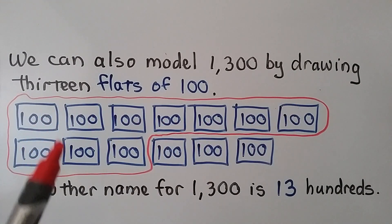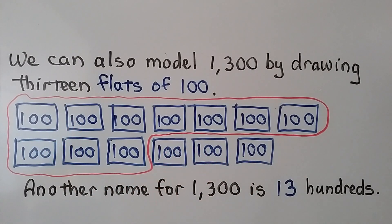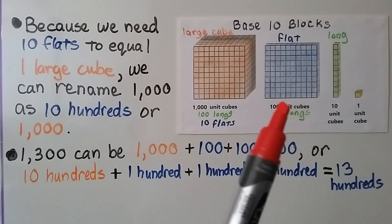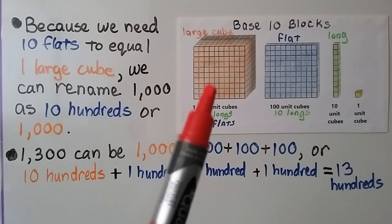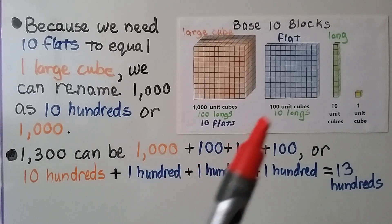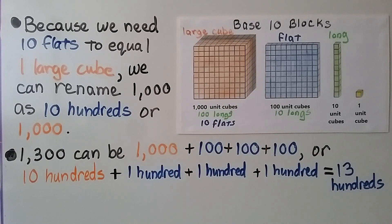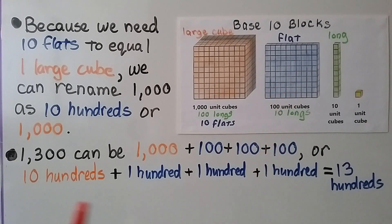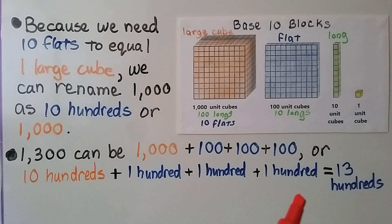The 10 flats in the red circle are equal to 1,000. That's 1,300 or 13 hundreds. Because we need 10 of these flats to equal 1 large cube, we can rename 1,000 as 10 hundreds. So 1,300 can be 1,000 plus 100 plus 100 plus 100, or we can say it's 10 hundreds plus 100 plus 100 plus 100, which equals 13 hundreds.